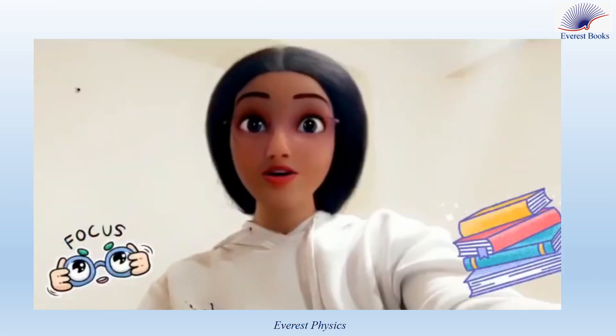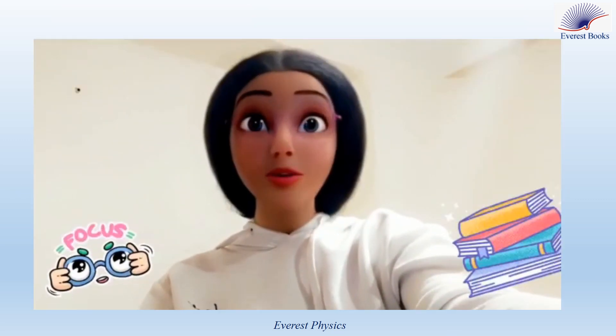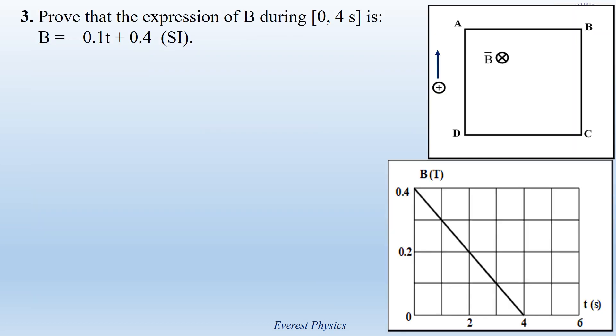Focus, please. This is important. Part 3. Prove that the expression of the magnitude of the magnetic field during the time interval 0 to 4 seconds is B equal to minus 0.1T plus 0.4 in SI units.